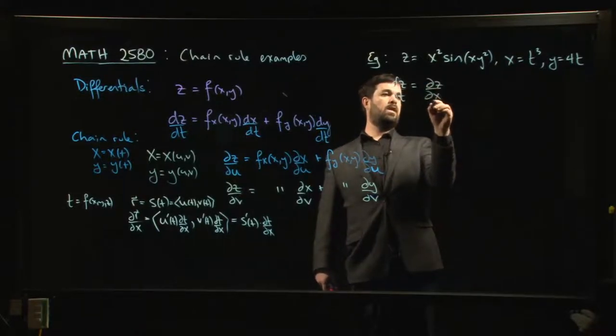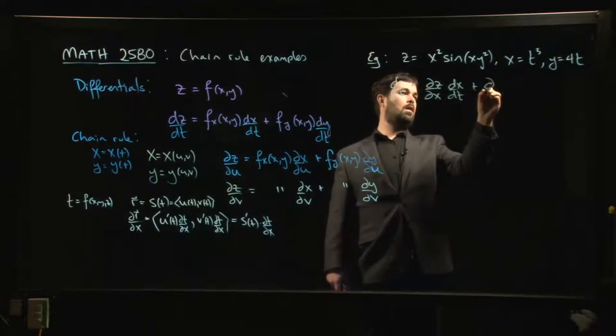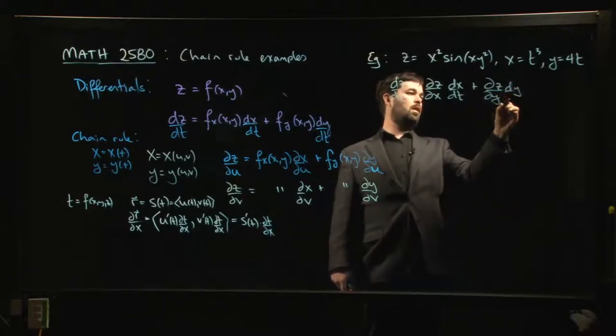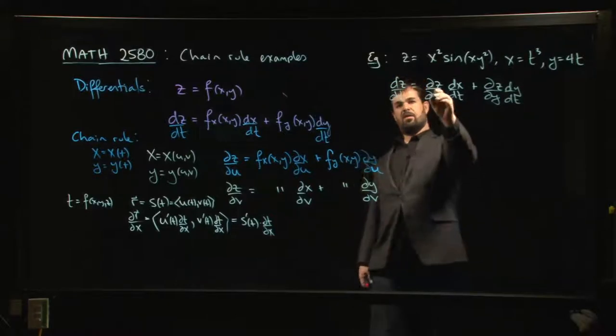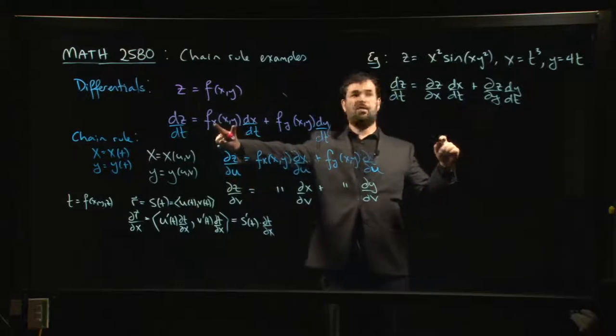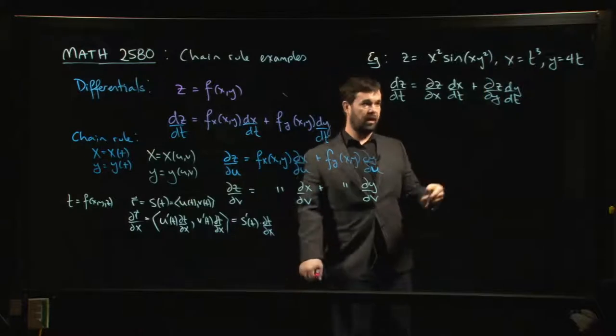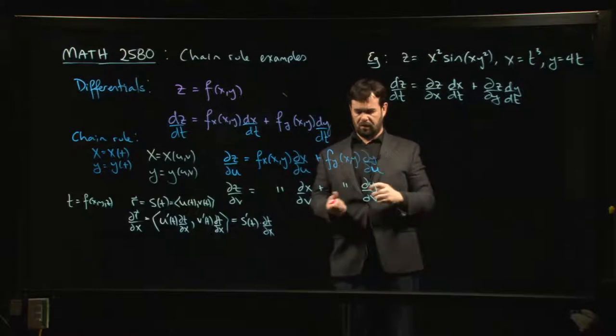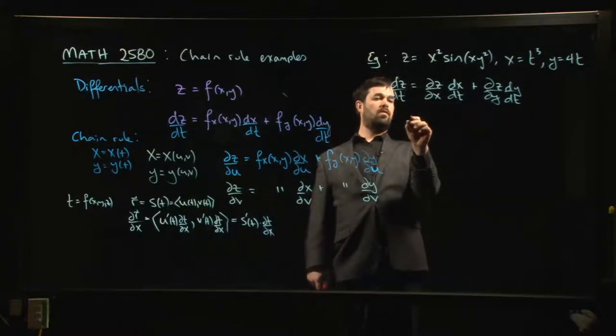It's dz/dx times dx/dt plus dz/dy times dy/dt. I decided to use this partial derivative of z notation because, well, to use the other notation first I'd have to give this thing a name. I'd have to tell you this is f of x,y. If you want to skip that step, you've always got this as an alternative notation in your back pocket.